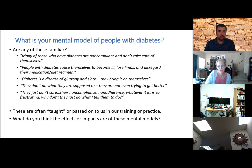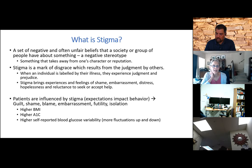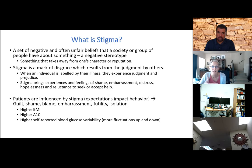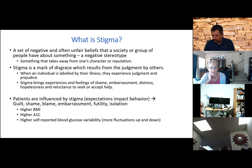What do you think the effects or impacts of these mental models are? That gets us to what is stigma. Stigma is a set of negative and often unfair beliefs about a group of people — a negative stereotype. It can cause disgrace and a feeling of being judged by others. That feeling of being judged brings on a sense of prejudice and causes feelings of shame, embarrassment, distress, hopelessness, and a reluctance to seek or accept help.